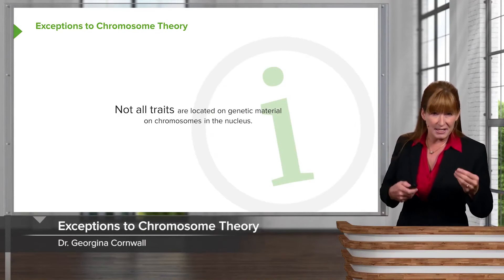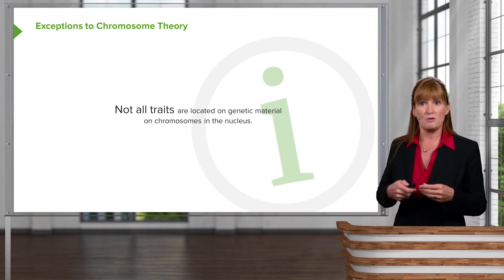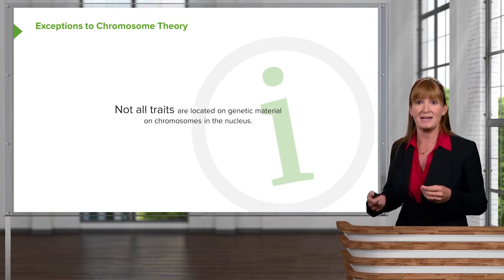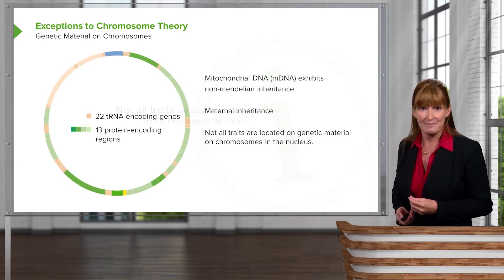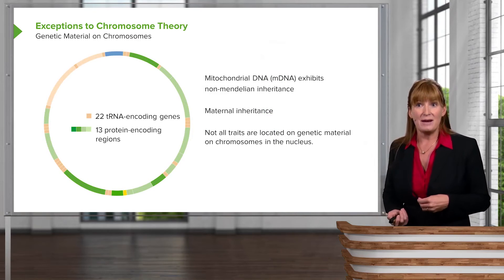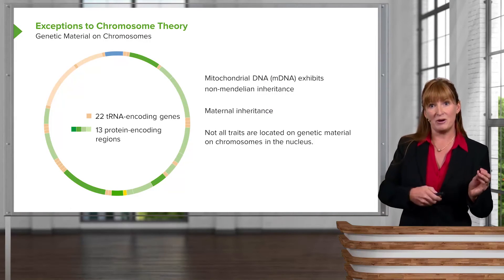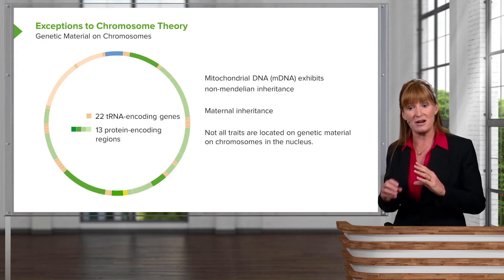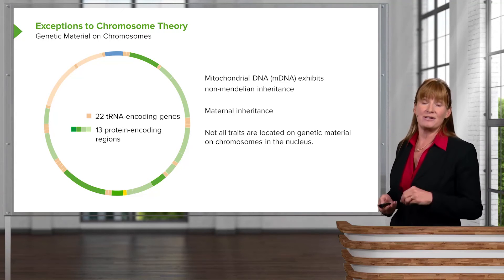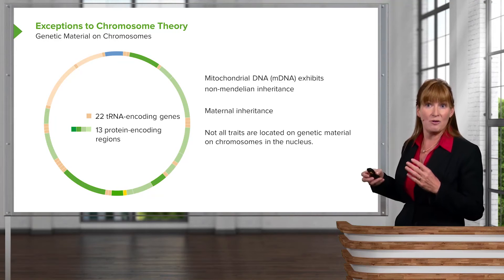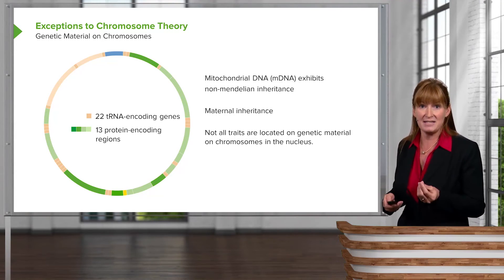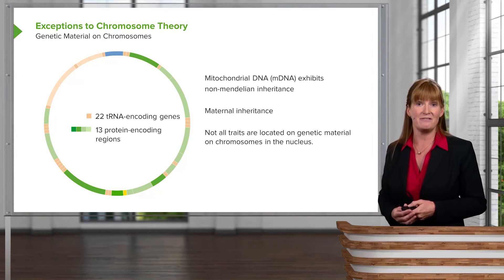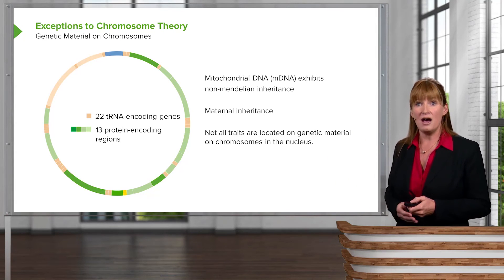Not all traits are going to be located on chromosomes in the nucleus. This is where we look at exceptions to the chromosomal theory of inheritance, because these things will not exhibit Mendelian-style inheritance patterns. First, we look at mitochondria — we know that mitochondria contain their own DNA. When a sperm fertilizes an egg, the sperm doesn't have room for much cytoplasm, so the egg is the contributor of all the cytoplasm and thus all the mitochondria and mitochondrial DNA. We've identified a number of genes on the mitochondrial chromosomes, and we can trace this maternal inheritance through multiple generations to identify relationships between individuals. So mitochondrial DNA has to follow a female lineage.